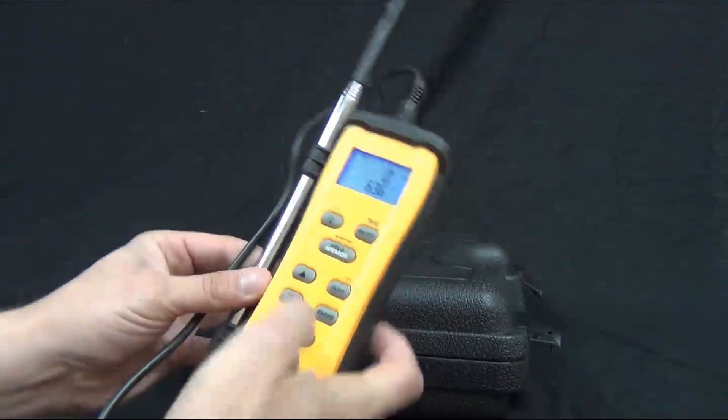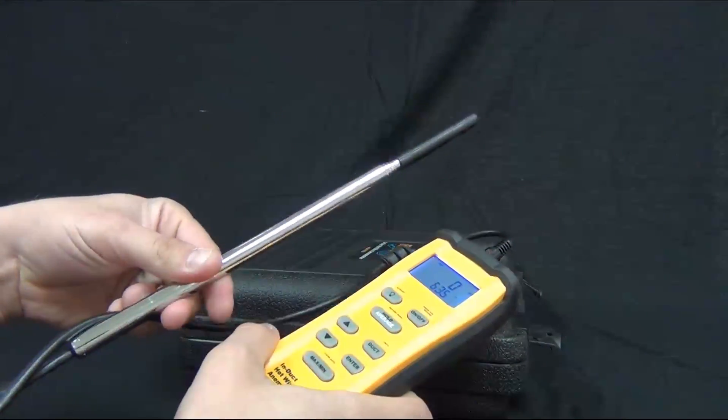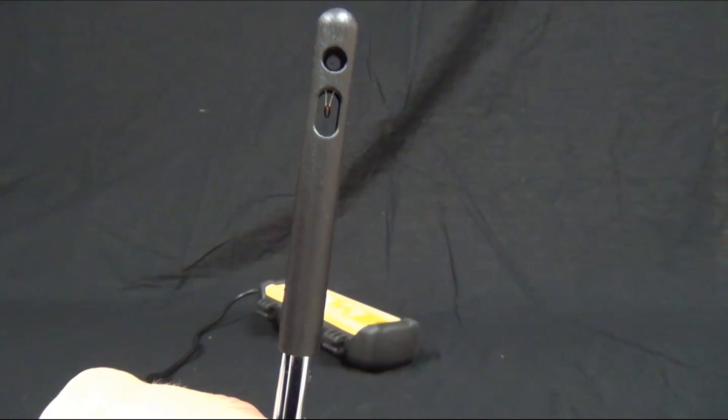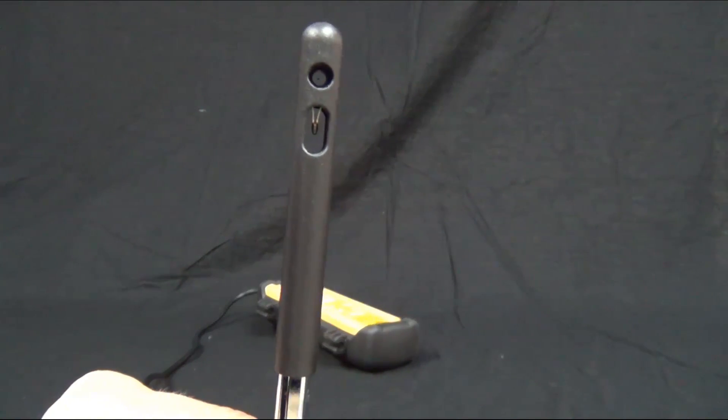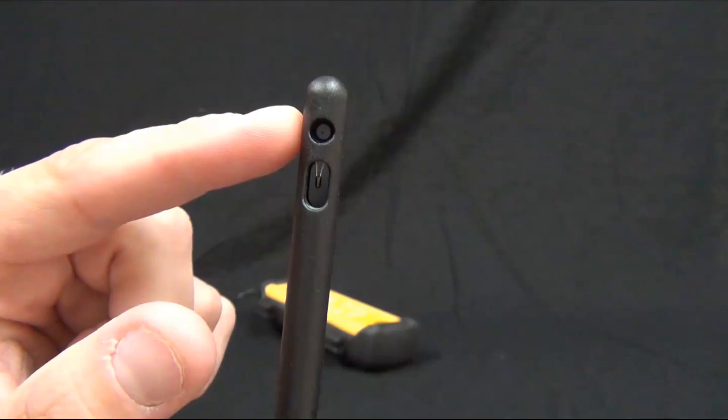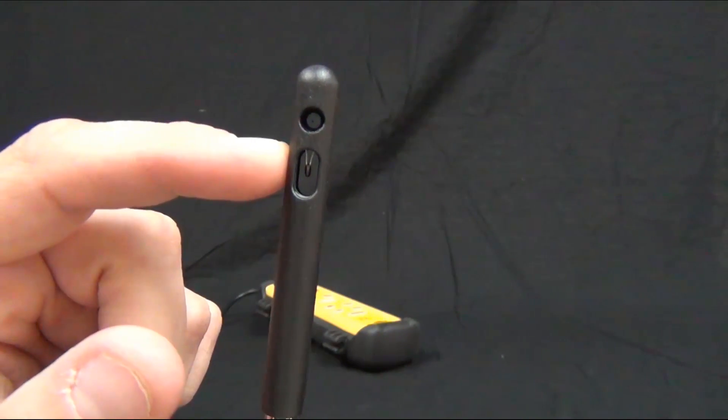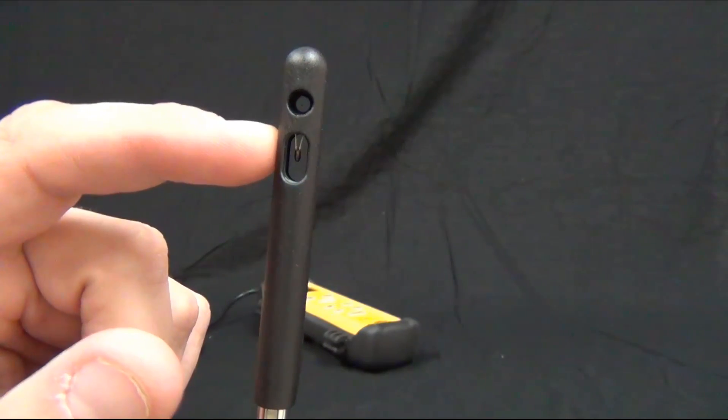On the STA-2 you can see that it has the wand. What the wand allows you to do is to get air velocity in the duct. It has two sensors: the top one is the hot wire which actually measures air velocity, and then we have a thermistor to measure temperature.